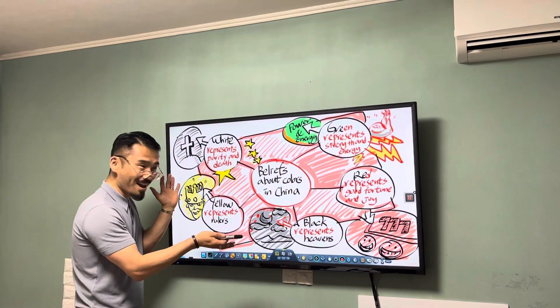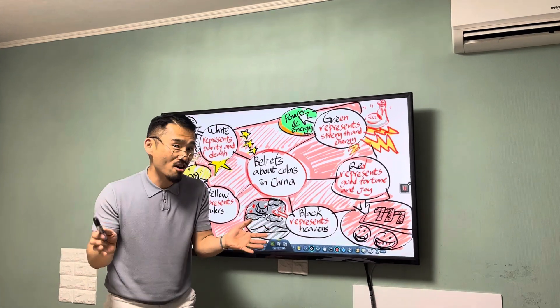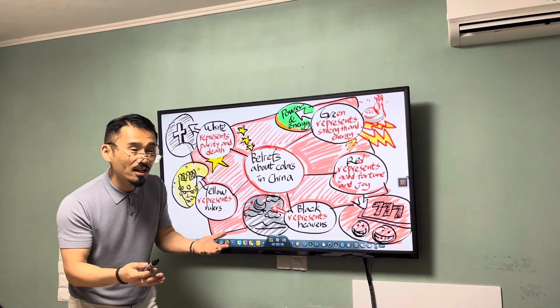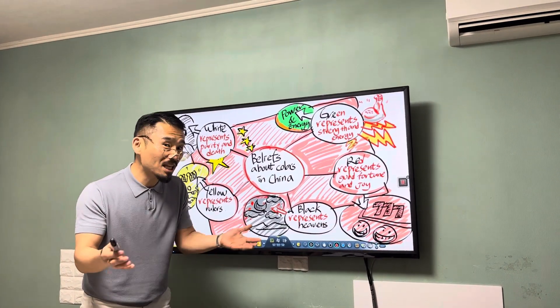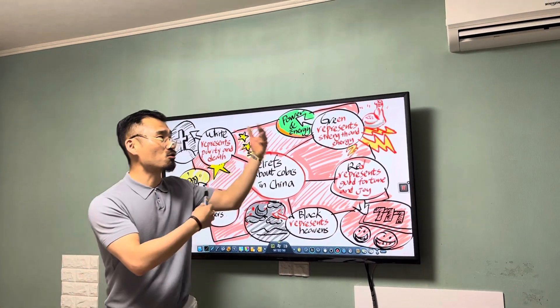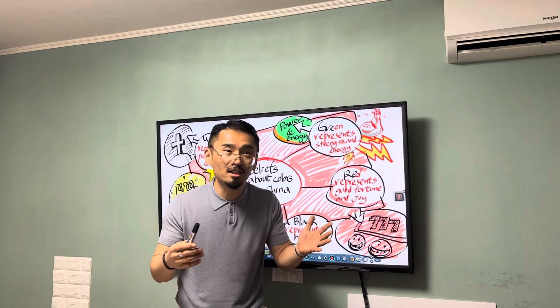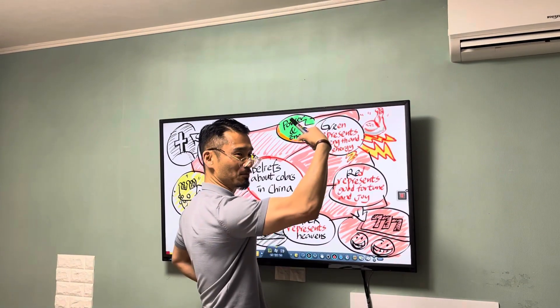Beliefs about colors in China. There are five colors that represent some beliefs. Let's start with the color green. Green represents energy and strength.